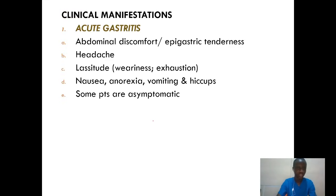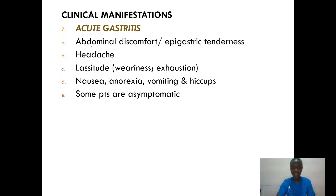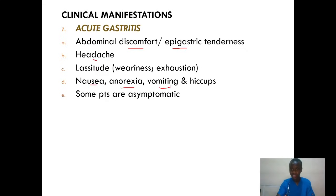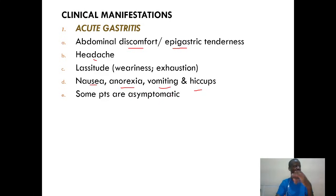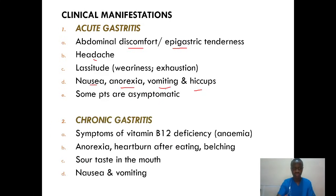What are the clinical manifestations? How will this person present with this type of condition? Mainly for acute gastritis, most of these clients will present with abdominal discomfort — specifically epigastric tenderness. Some will present with headache, others with nausea, anorexia, vomiting, and also hiccups. But we need to know that some patients can be asymptomatic — they have the inflammation but are not bringing out these expected symptoms.